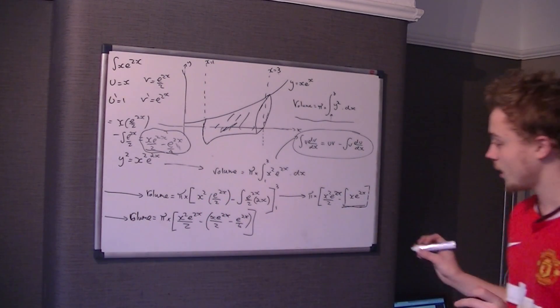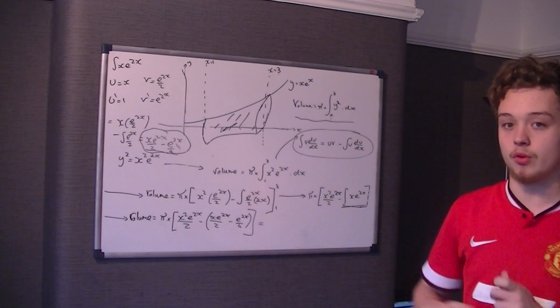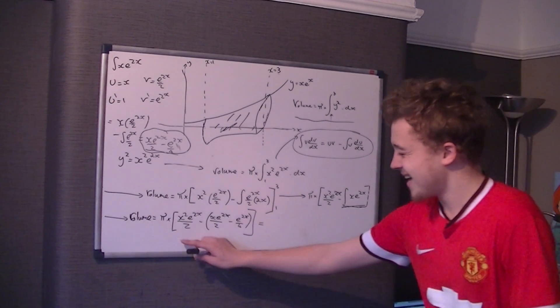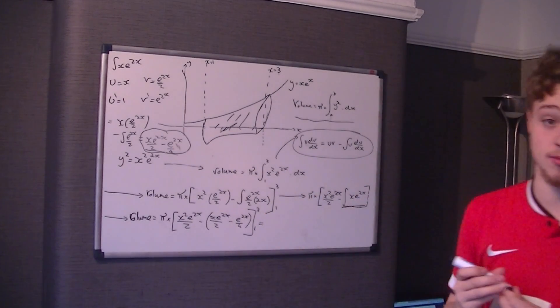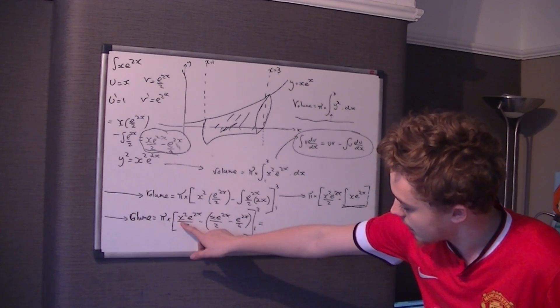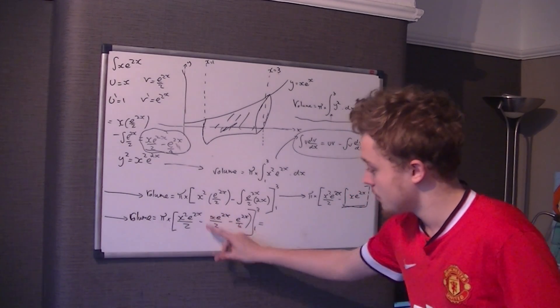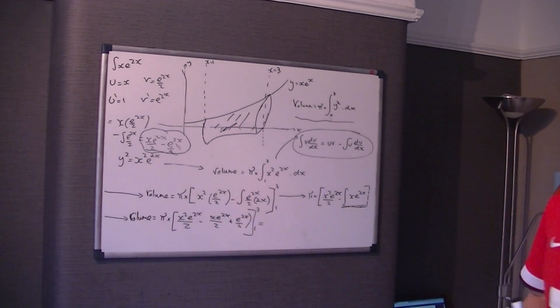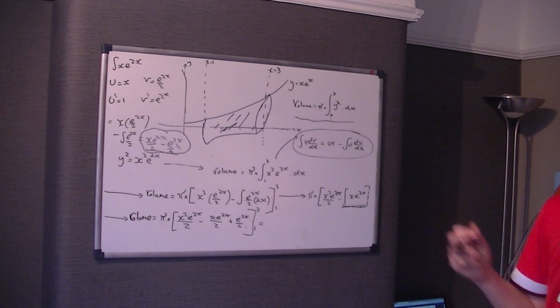So it's volume π times x squared e to the 2x, still with the limits of 3 and 1 because they're x limits. So π times x squared e to the 2x on 2 take away xe to the 2x on 2. So we can remove that bracket. But we're taking away a negative of e to the 2x on 4, so we add it. So it's plus e to the 2x on 4. And then it's just a case of subbing in our limits 3 and 1 and taking away as normal, and then times in the whole answer by π.